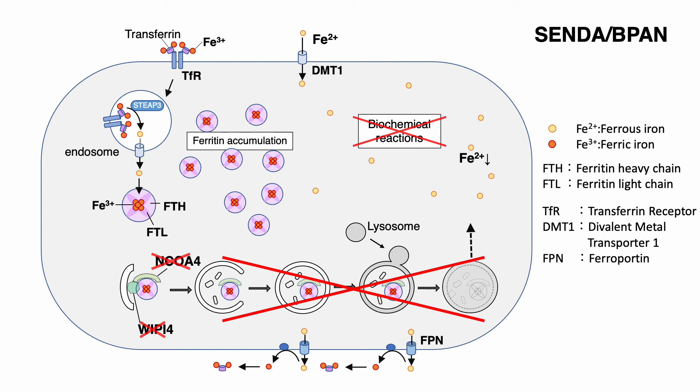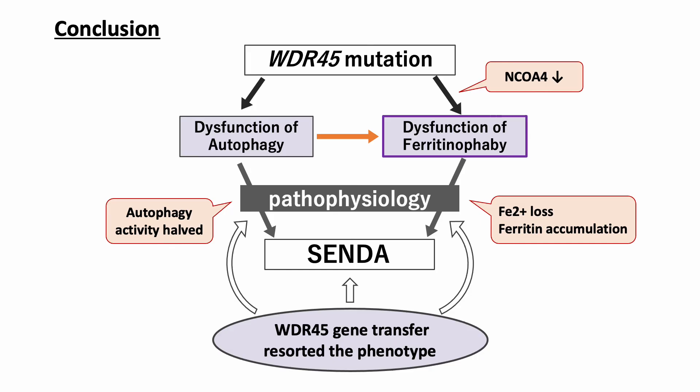The expression of ferrous iron transporters changes to maintain the amount of ferrous iron. That is, DMT1 increases and ferroportin decreases, and lysosomal iron accumulates because of reduced consumption. In this study, we found that autophagy of ferritin was impaired in BPAN, and it resulted in abnormal iron metabolism.